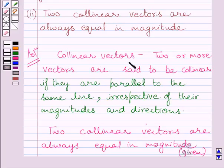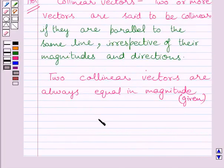But by the definition of collinear vectors, two or more vectors may or may not be equal in magnitude. So the given statement is false.